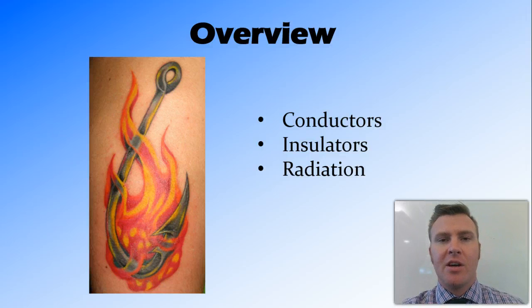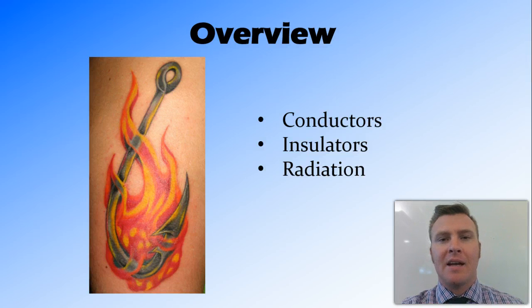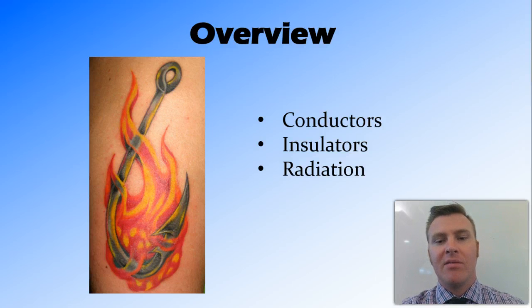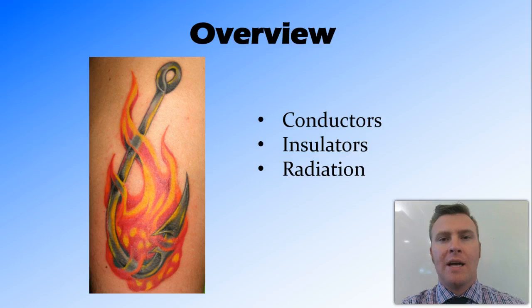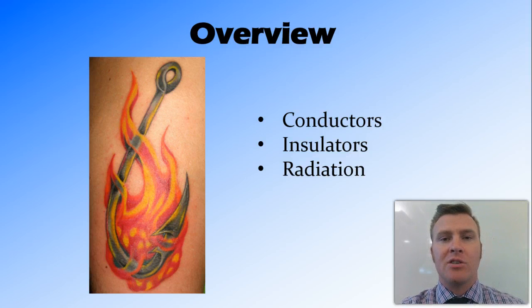In this video we've looked at conductors, defining them as something that conducts heat well. We've defined insulators as something that doesn't conduct heat very well. And we've looked at the three ways in which heat radiation can interact with an object: transmission, reflection, and absorption.